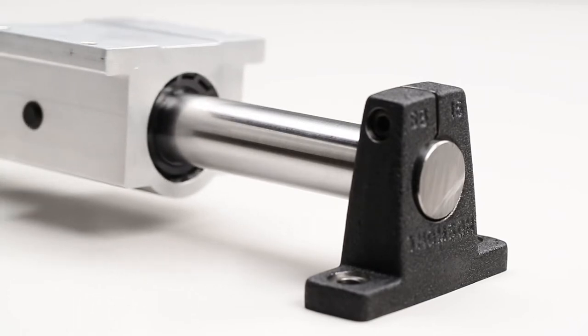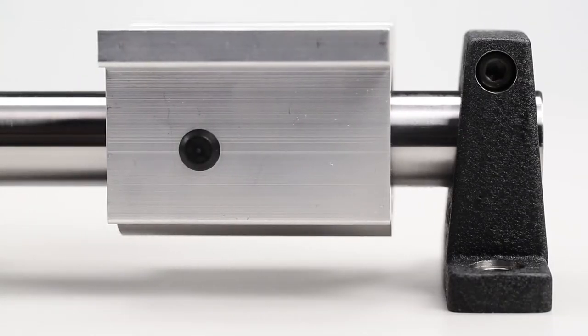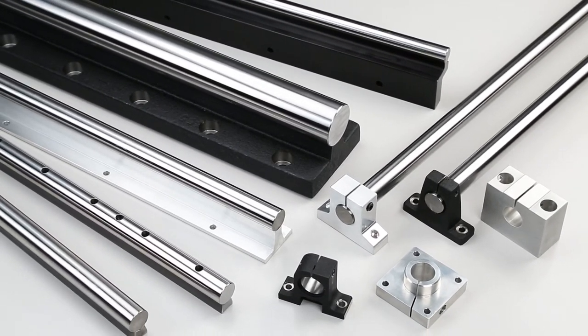In end supported applications, closed bushings are used since the middle of the shaft is clear of obstructions. Thompson offers a full selection of shaft supports.